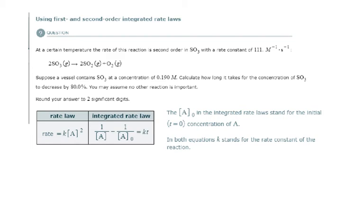All right, here we are going to choose whether we're going to use the first or second order integrated rate law. Right off the bat, we see that this reaction is second order and there's only one reactant. It's second order in sulfur trioxide, so that means this is a second order overall reaction as shown here.